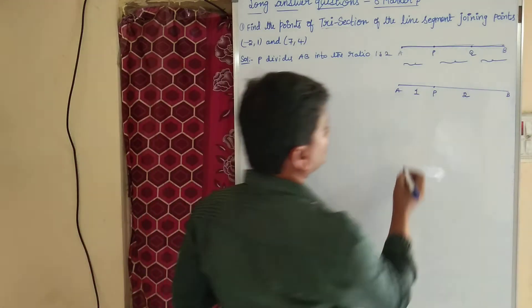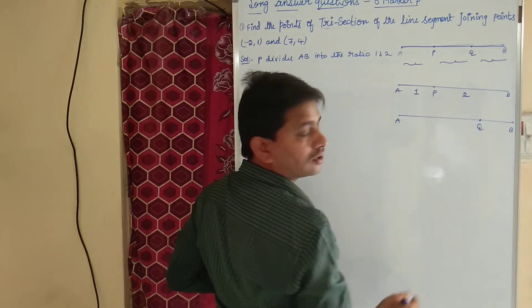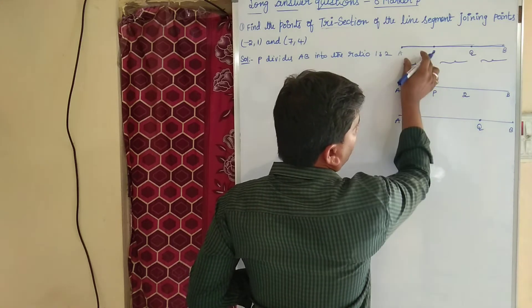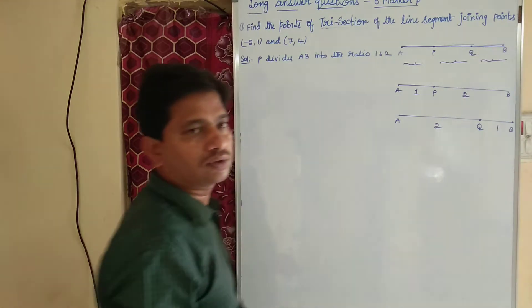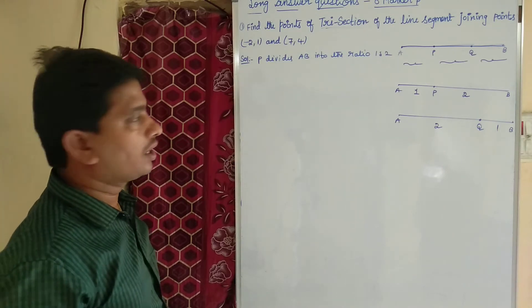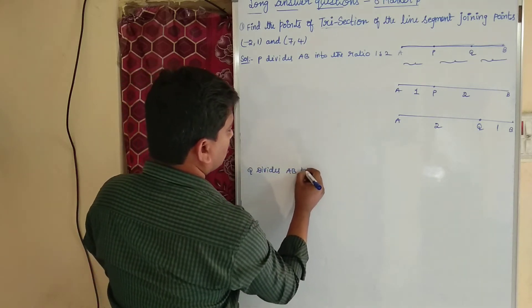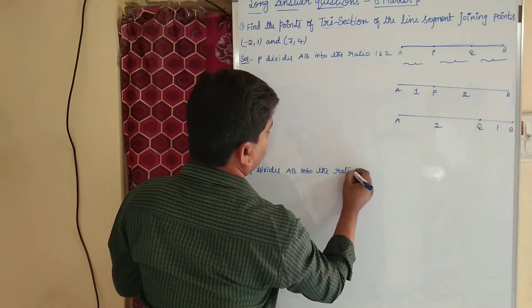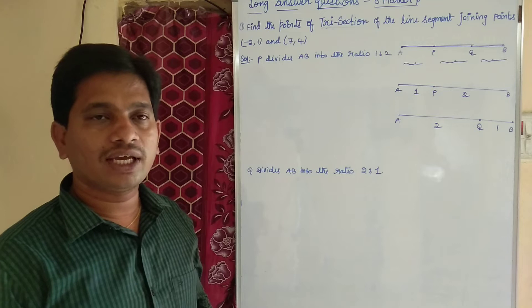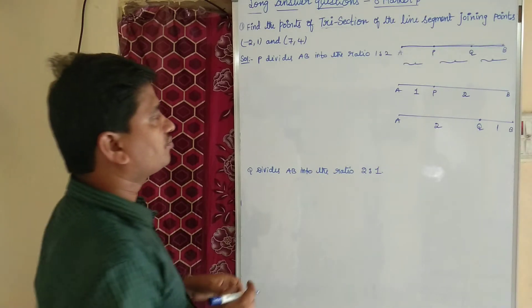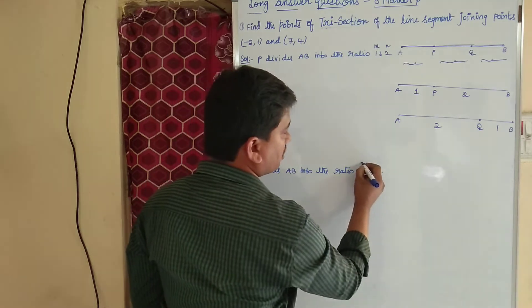What about Q? If you observe line segment AB, this is point Q. AQ is two parts and QB is one part. So P divides AB into the ratio 1 is to 2, and Q divides AB into the ratio 2 is to 1. In general we call the ratio M is to N.